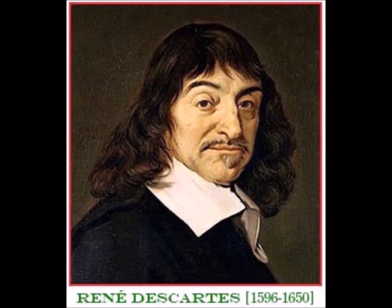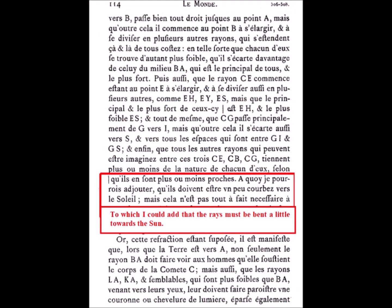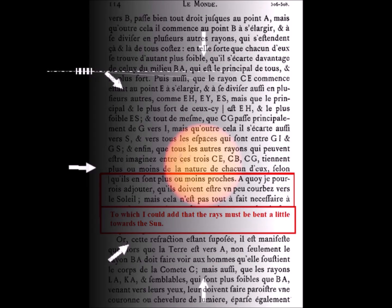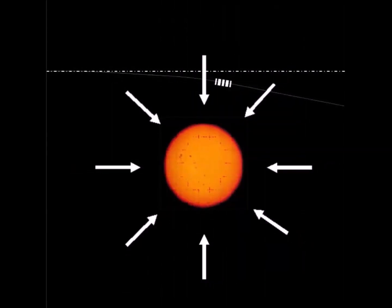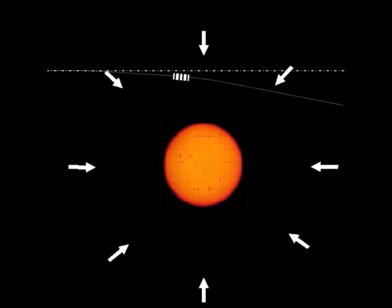The deflection of light by the sun is a remarkable fact that Descartes foresaw almost 400 years ago. The condensation of ether in the sun causes deviation of the wave trains, and therefore in particular of the light which reaches us from the stars. This phenomenon can therefore be explained very simply without materialist hypotheses on the nature of time and space.